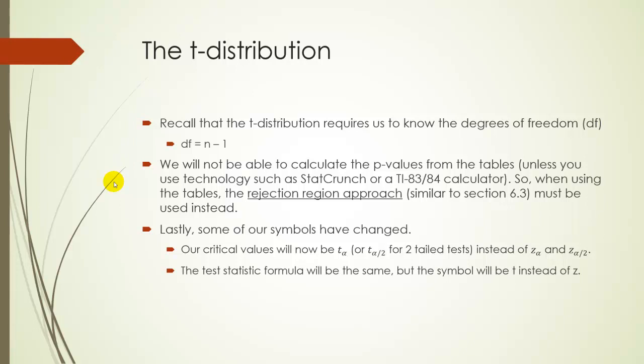So, lastly, some of our symbols have changed. Basically, all the Z's from before are now T's. So, our critical values are T alpha or T alpha over 2, if we're doing a two-tail test. And our test statistics can be the exact same formula, except that we're going to use T instead of Z. So, it's going to be T equals X bar minus mu naught over S over square root of N, instead of Z equaling that. Really, very little difference. The only major difference is we're using a different table.